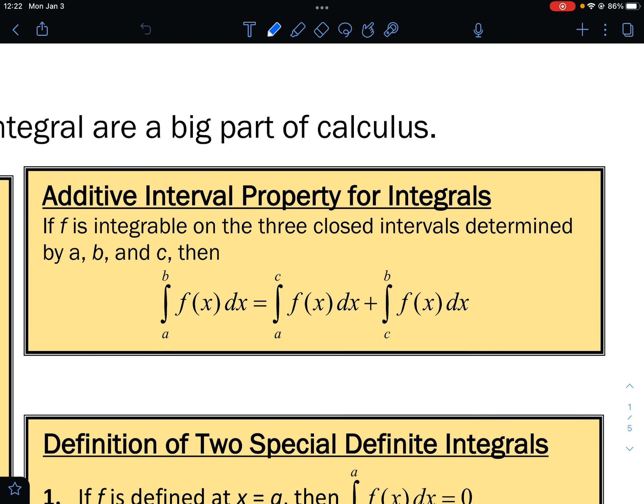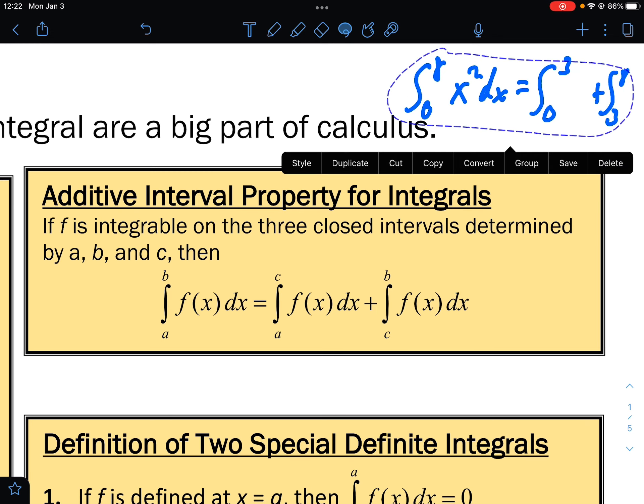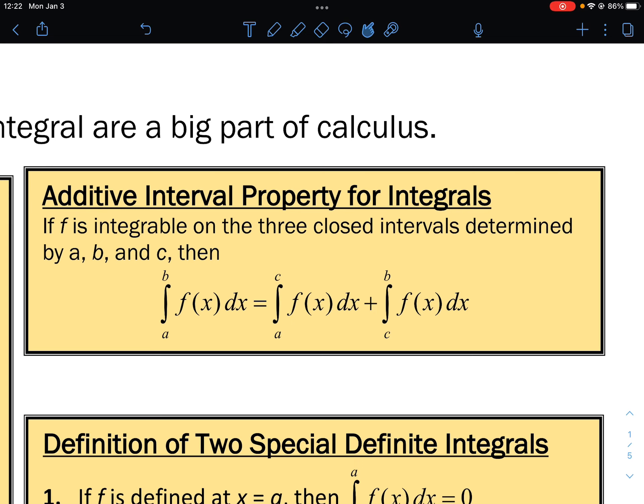So what do we mean by that? Just making up an example here. If we have the integral from 0 to 8 of x squared dx, we can split that up into the integral from 0 to 3 of x squared plus the integral from 3 to 8 of x squared dx. Obviously, it's not something you would do in a problem like that, but it comes in handy when we're talking about a graph.